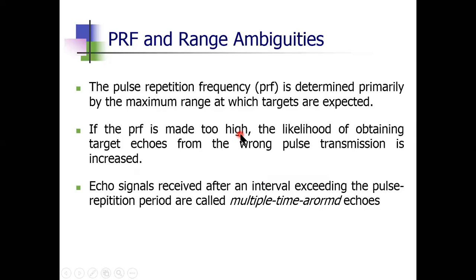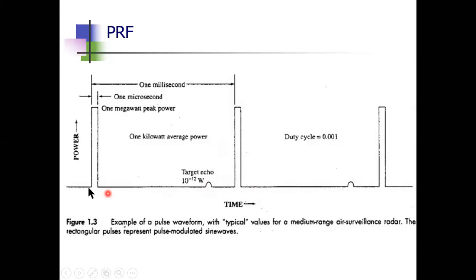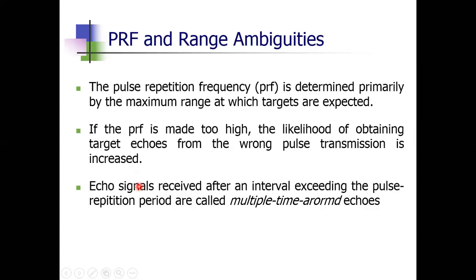If PRF is made too high, TP becomes smaller, meaning the second pulse arrives very close to the first. The duration within which the echo must be received becomes very short, making ambiguity very high. If PRF is too high, the likelihood of obtaining target echoes attributed to the wrong pulse transmission increases — that is, range ambiguities increase.